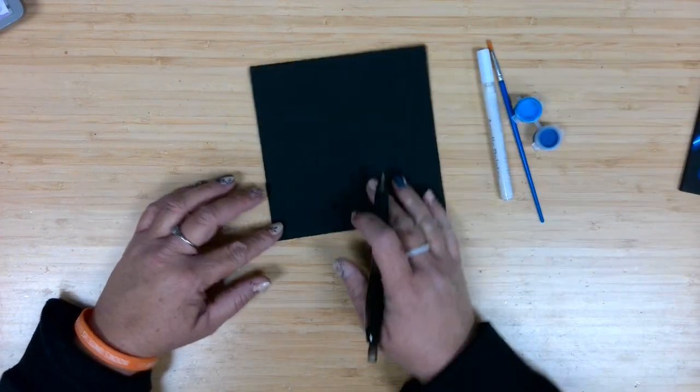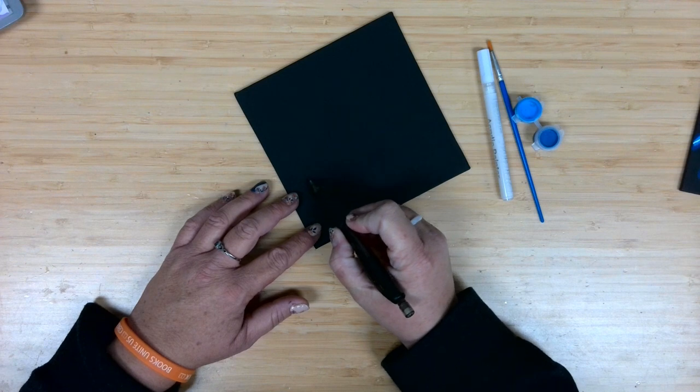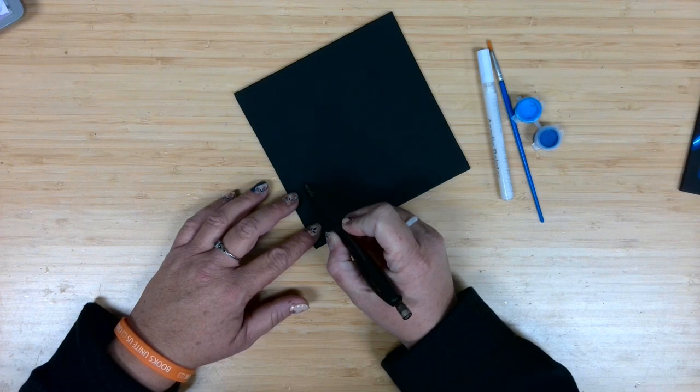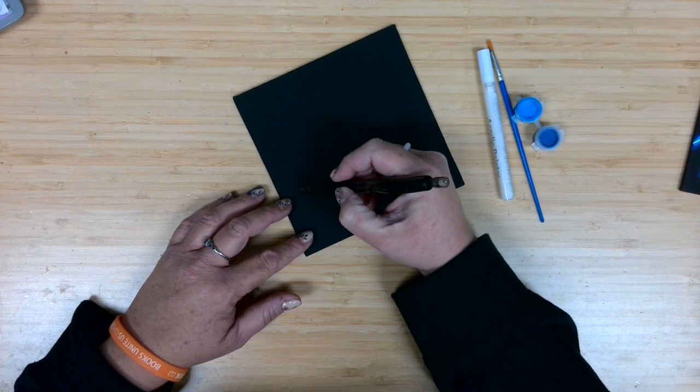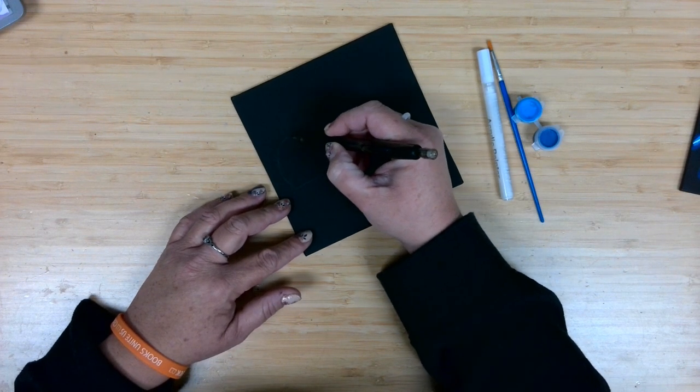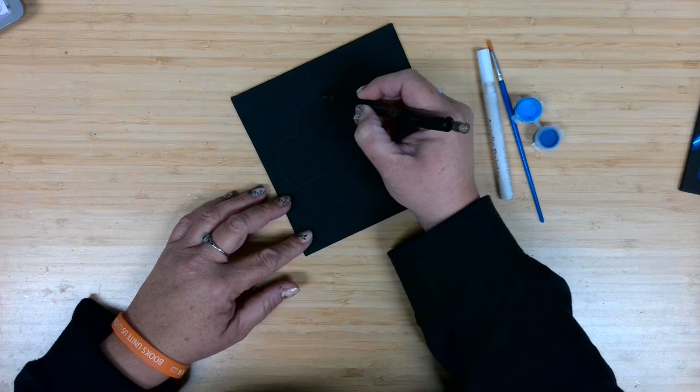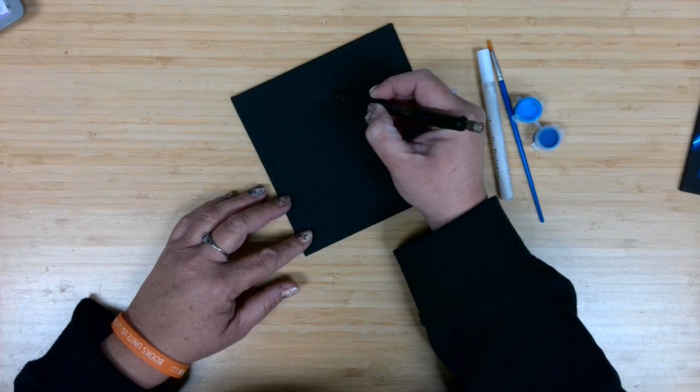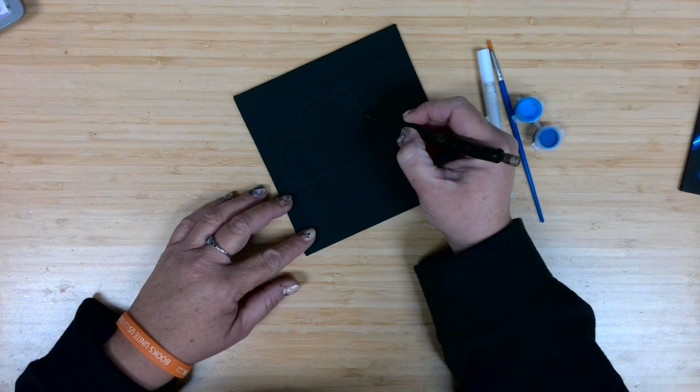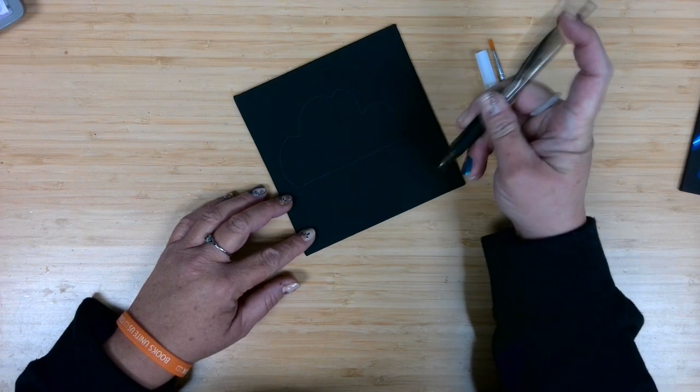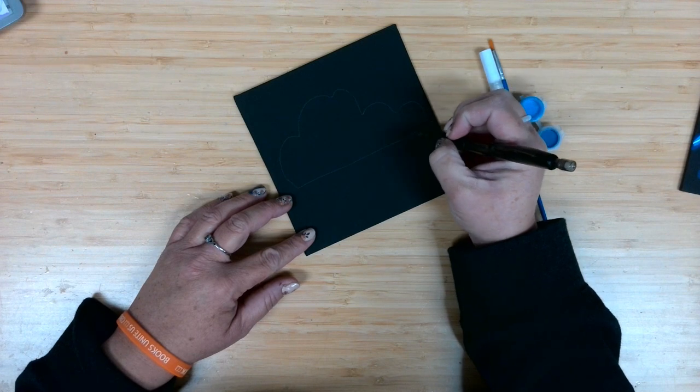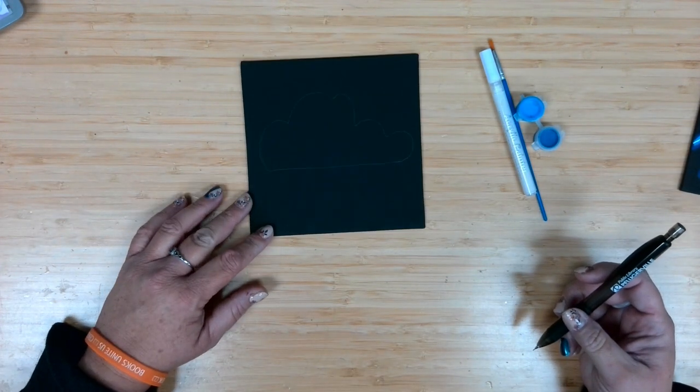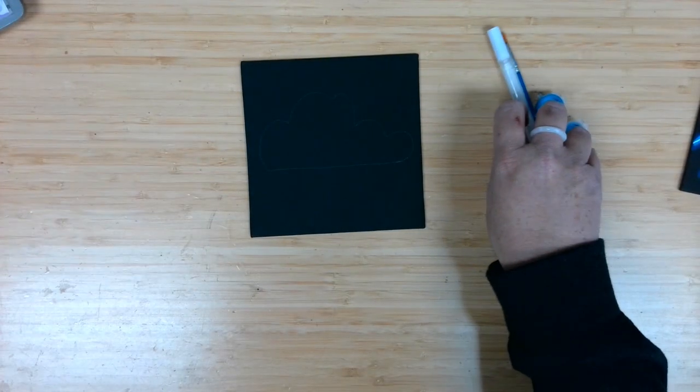So I am going to go ahead and start with the pencil. And I think for this one, I am going to do a quick cloud design. So I'm just going to do a straight line across there. I'm going to come up and around. Give my little cloud some detail here. Oh, mechanical pencils break. All right. Really hard to see that light pencil line. But that's perfect. That's exactly what I want.